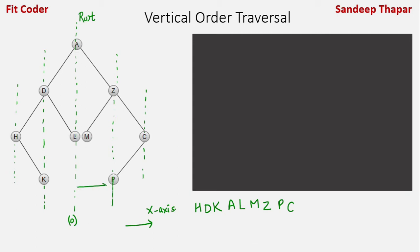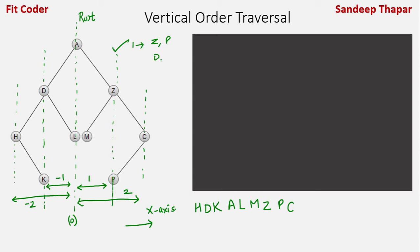P and Z are at distance 1. C is at distance 2. On the right side we consider distance as minus 1, so D and K are at minus 1 distance and H is at minus 2 distance. Nodes Z and P are both at distance 1 from the root node. Nodes D and K are at distance minus 1, H is at distance minus 2, and C is at distance 2.